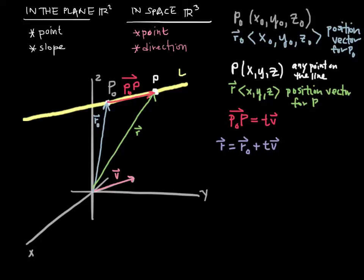Note that when t equals zero, we just have r-naught all by itself, pointing straight out to p-naught, the known point on the line.